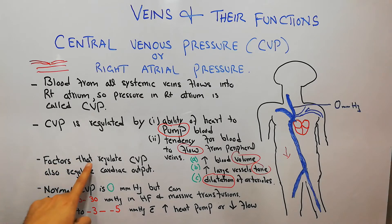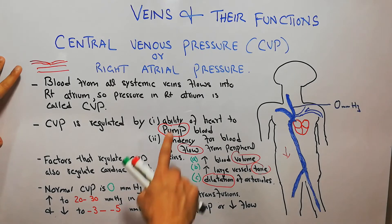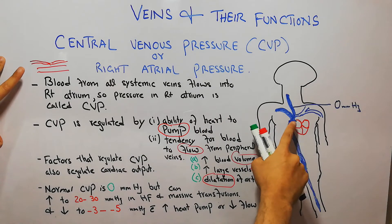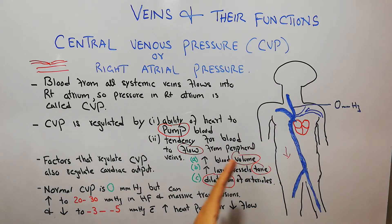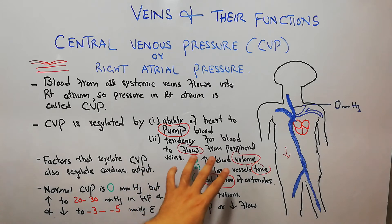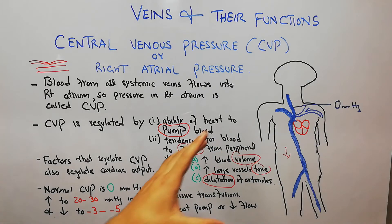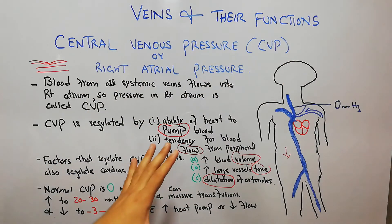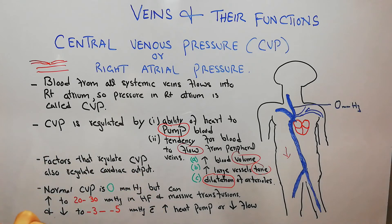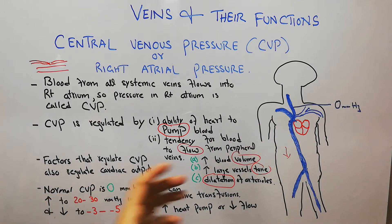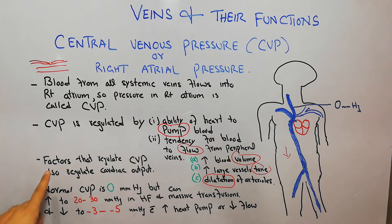The factors that regulate the central venous pressure also regulate the cardiac output. If the pumping of the heart increases, not only will the CVP fall, but the cardiac output will also increase. If the flow of blood towards the heart increases, it will maintain the central venous pressure and also increase the cardiac output. Cardiac output is the amount of blood pumped by the heart in one minute — more blood coming towards the heart means more pumping and more cardiac output.